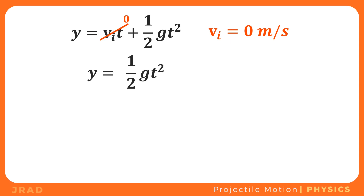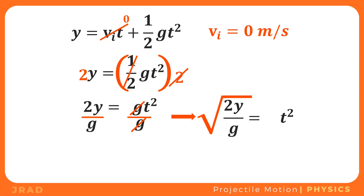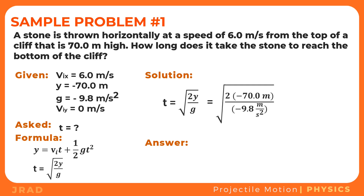From this equation, we multiply both sides by 2 and divide both sides by g, then take the square root to get the formula for time: t equals the square root of 2y over g. Substituting the values — t equals the square root of 2 times negative 70 meters over negative 9.8 m/s² — we get that the stone took 3.78 seconds to reach the bottom of the cliff.